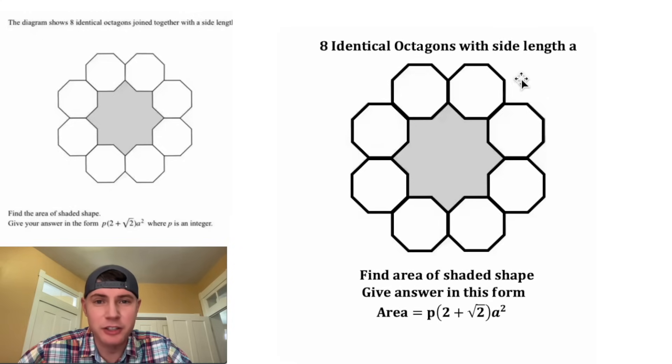It says we have eight identical octagons with side length A. Now we're trying to find the area of this shaded shape, and what's the answer given in this form? Area equals P times the quantity 2 plus square root of 2, A squared.